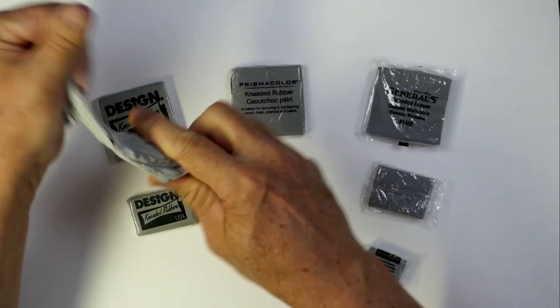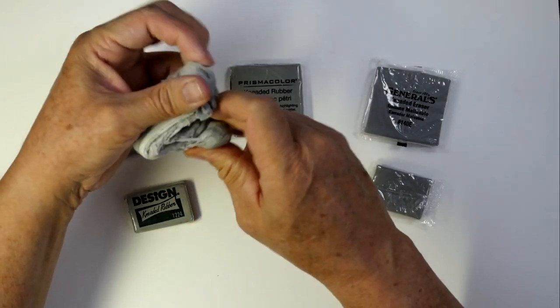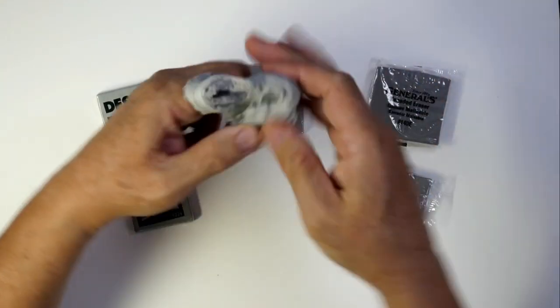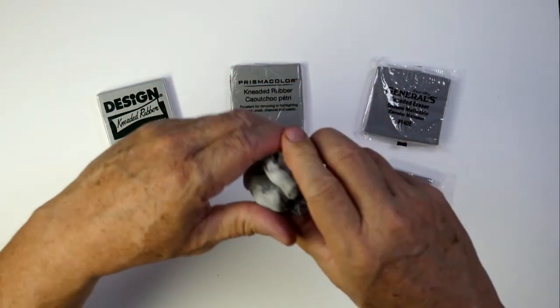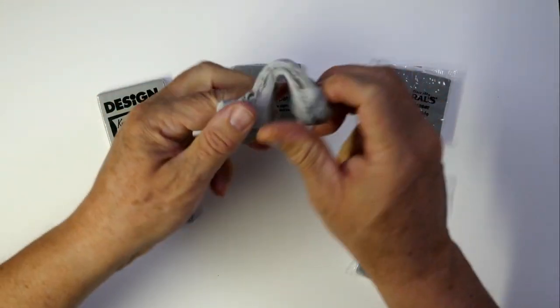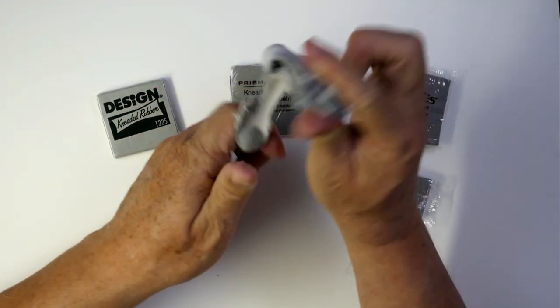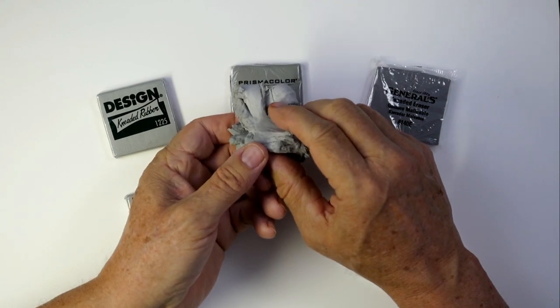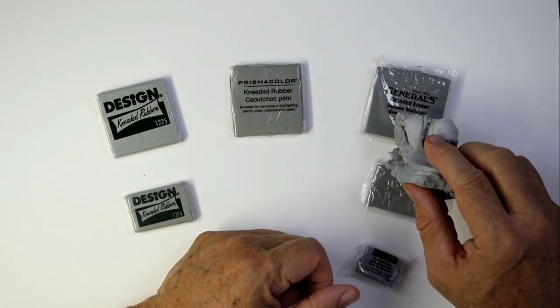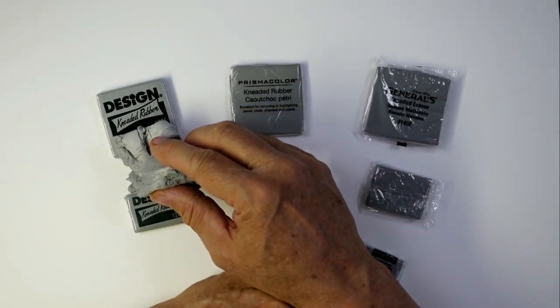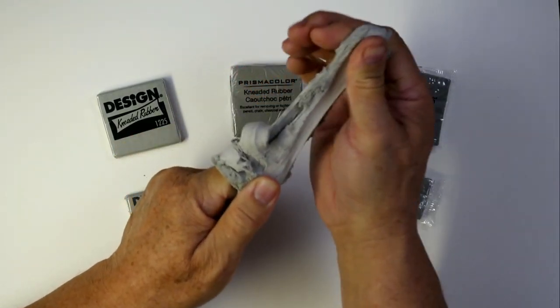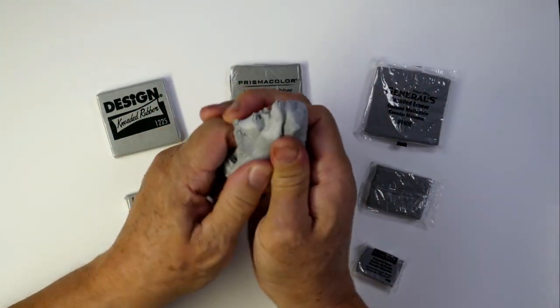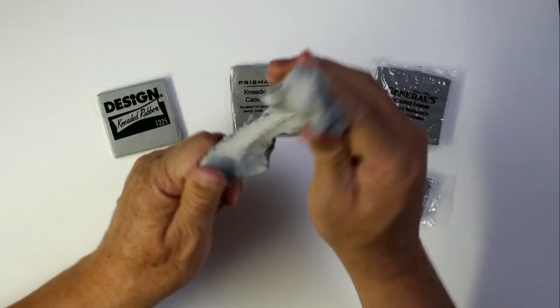You will find that it gets easier and easier and easier. When you end up getting this softened up, stretched out, repetitively taking this thing and folding it back over and pulling it again, sometimes it's easier to just pull it apart with your thumbs. It will get softer and softer and softer. Look what's happening. This is actually turning out lighter than the original product when it came out of the package.